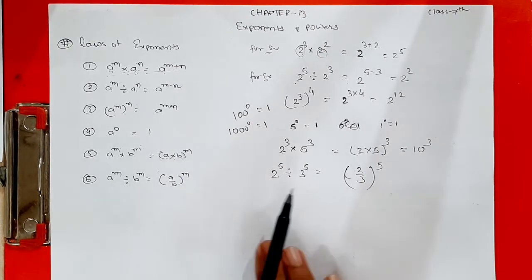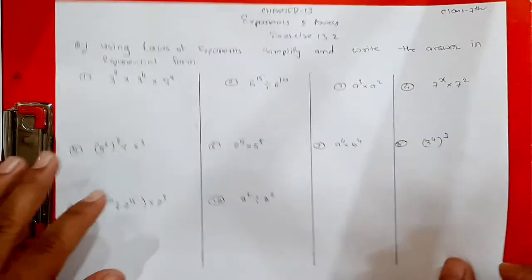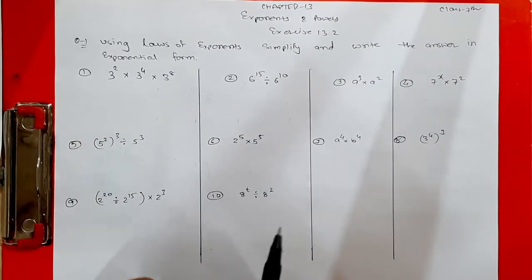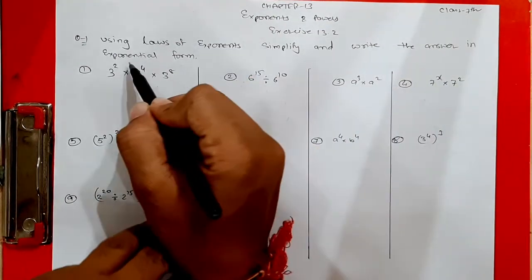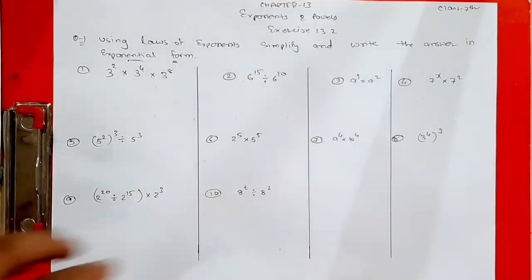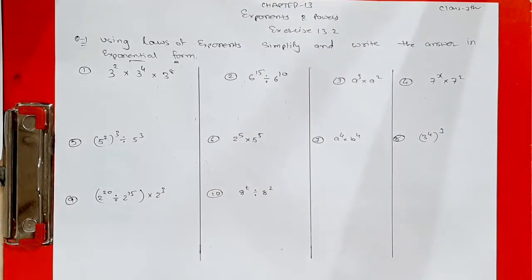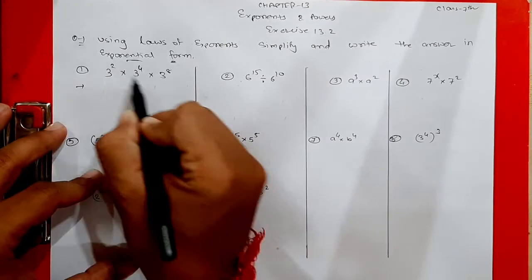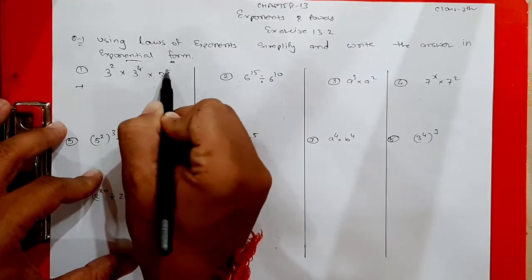Now let us start Exercise 13.2. The instruction says: using laws of exponents, simplify and write the answer in exponential form — meaning write the answer in the form of a power. The first question is: 3 raised to 2 multiplied by 3 raised to 4 multiplied by 3 raised to 8.